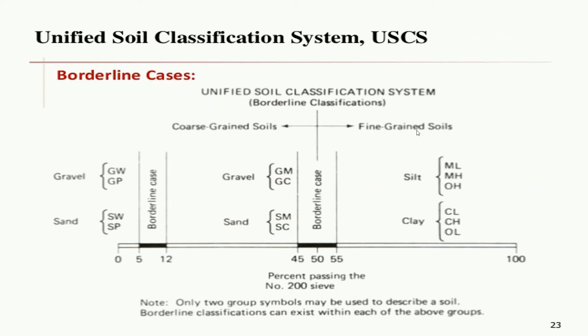There are also borderline cases in USCS, including coarse-grained soil with 5% to 12% fines, fine-grained soil with limits within the shaded zone of the plasticity chart, and soils containing similar fine and coarse-grained fractions. We should note that only two group symbols may be used to describe a soil borderline classification. Gravels and sands are shown with their notation, and one measuring scale is broadly used for USCS classification.